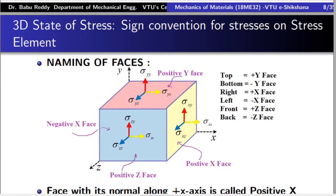As already discussed, stress at a point is dependent on the orientation of the cross section area that we consider. Technically speaking, you can draw an infinite number of orientations at a point, so you should have infinite number of stresses. However, it is enough — we can show that later — that if you know the stress on 6 perpendicular faces at a point, then the stress on any other inclination or orientation can be found out.